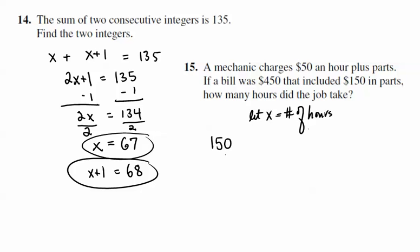But there's also a variable cost, and that variable cost is based on the number of hours it takes to complete the job. So if the mechanic charges $50 times the number of hours it takes him to finish the job - we'll call that number x for right now - in this particular case, the total came out to be $450. So $150 in parts plus $50 times however many hours it takes equals $450.